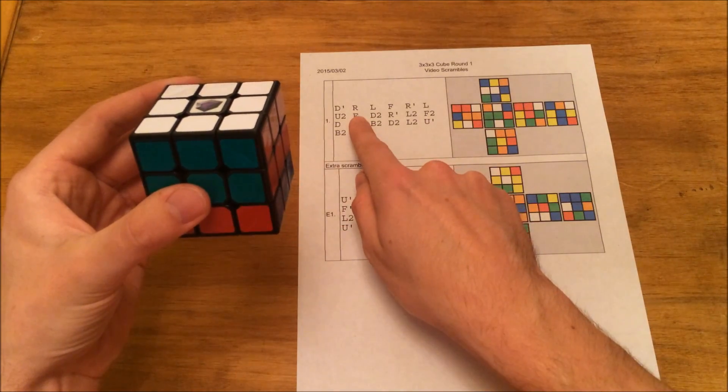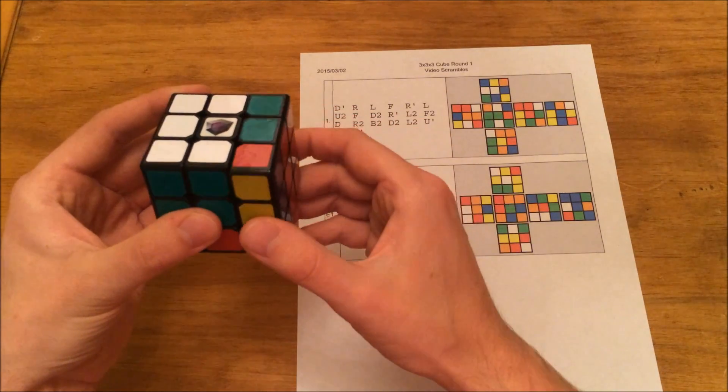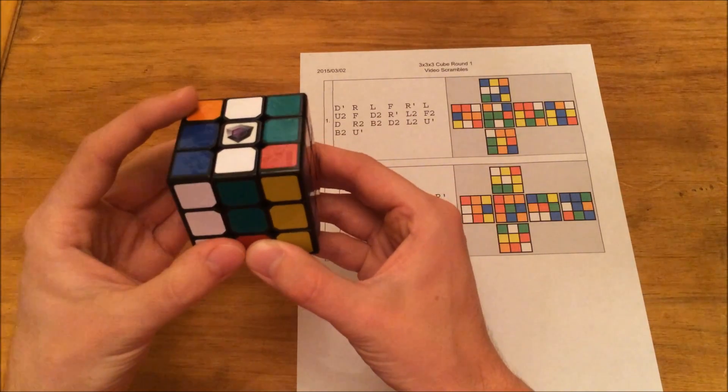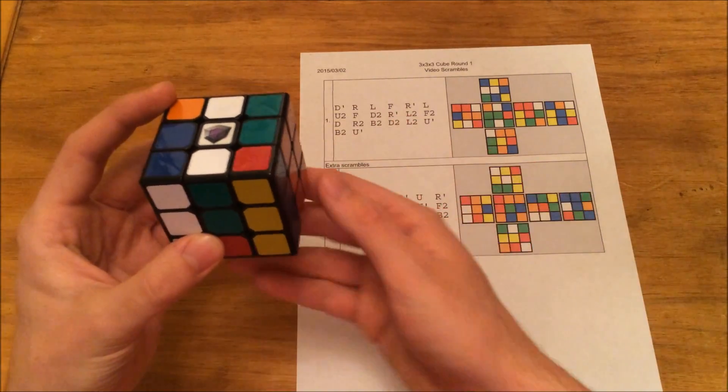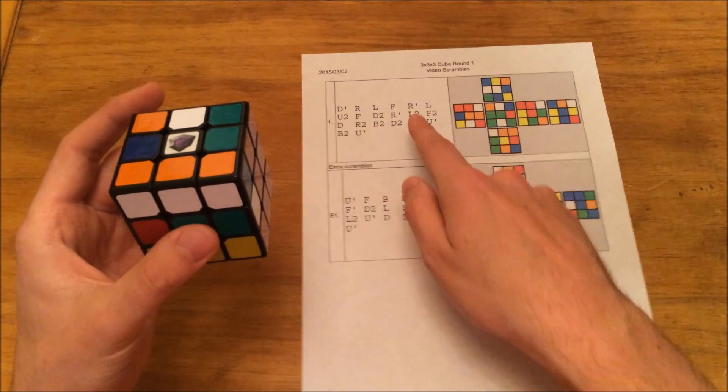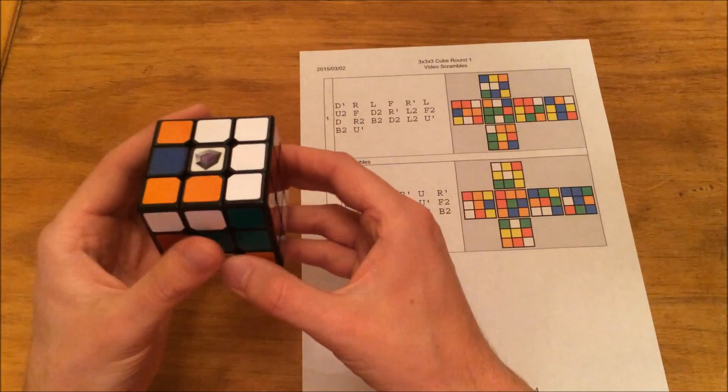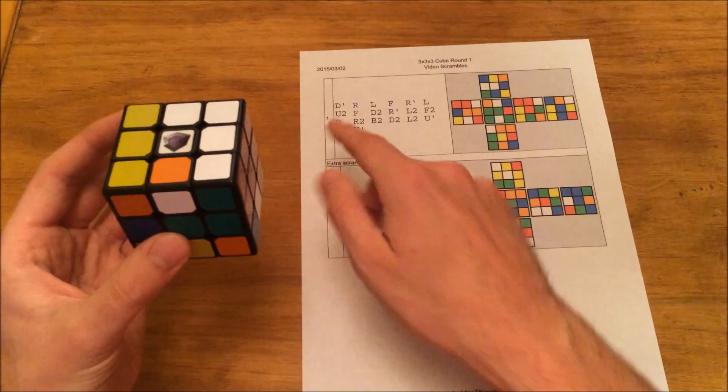Then we have an R. I will do an R. Then we have an L. I will do an L followed by an F. So we'll do an F, followed by an R prime, followed by an L, followed by a U2.